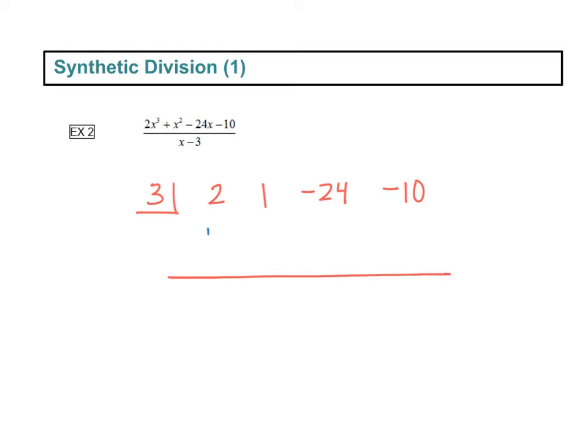All right, so this starts by, I guess you could say adding down. We always add down, so 2 plus the nothing that's there is a 2. And then we multiply 2 times 3, and it goes diagonally to the right. 2 times 3 is 6, and then we add down. 1 plus 6 is 7.